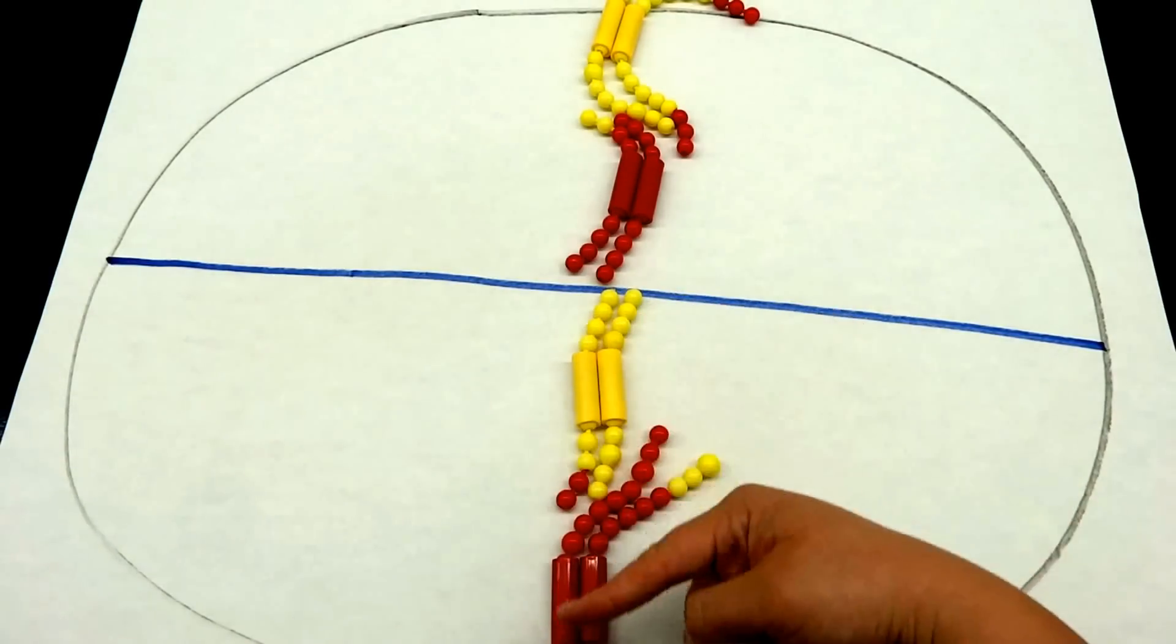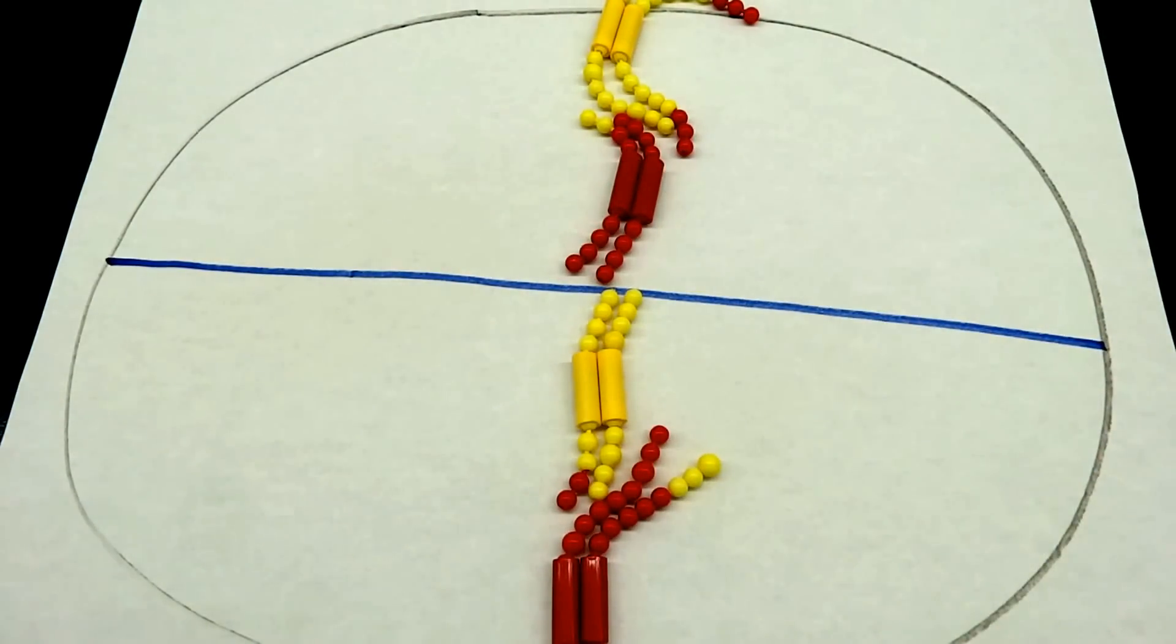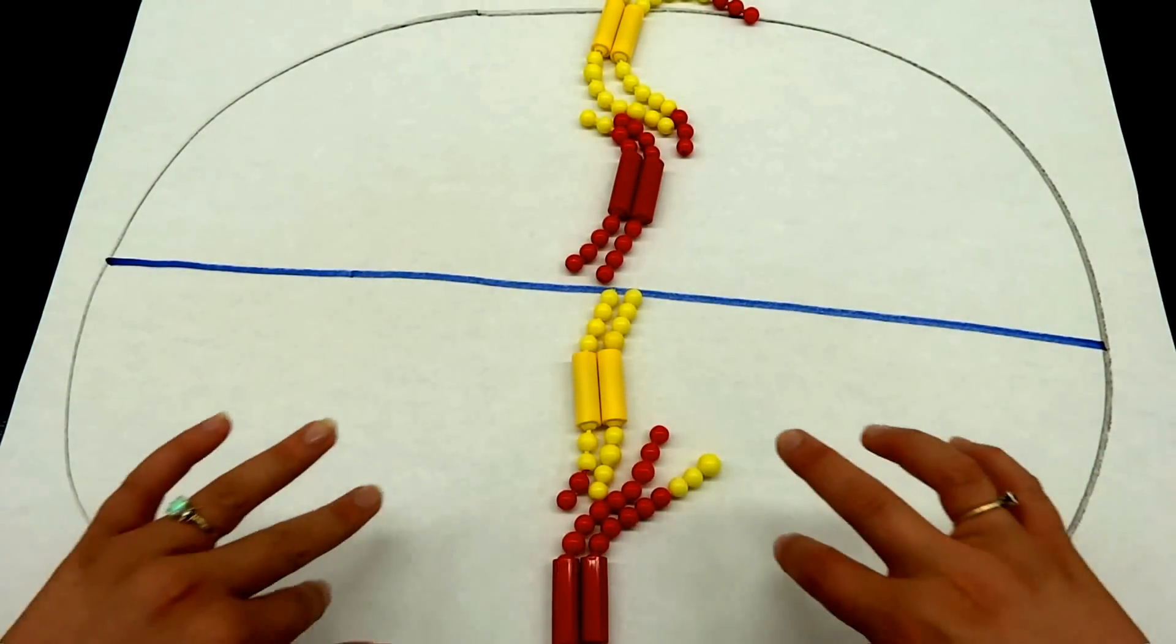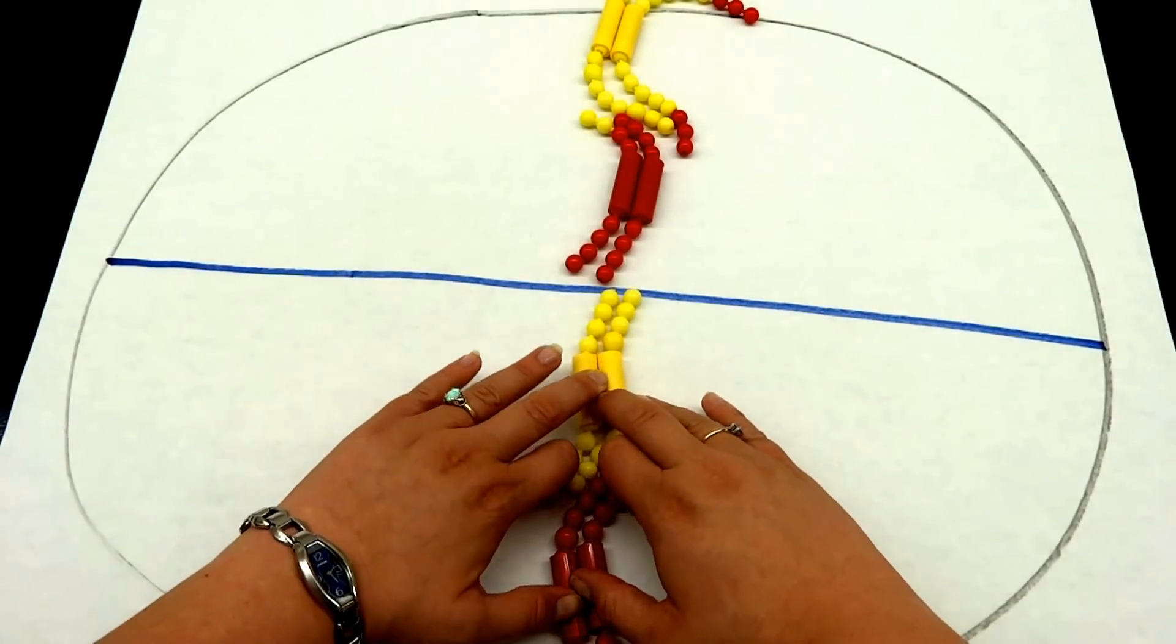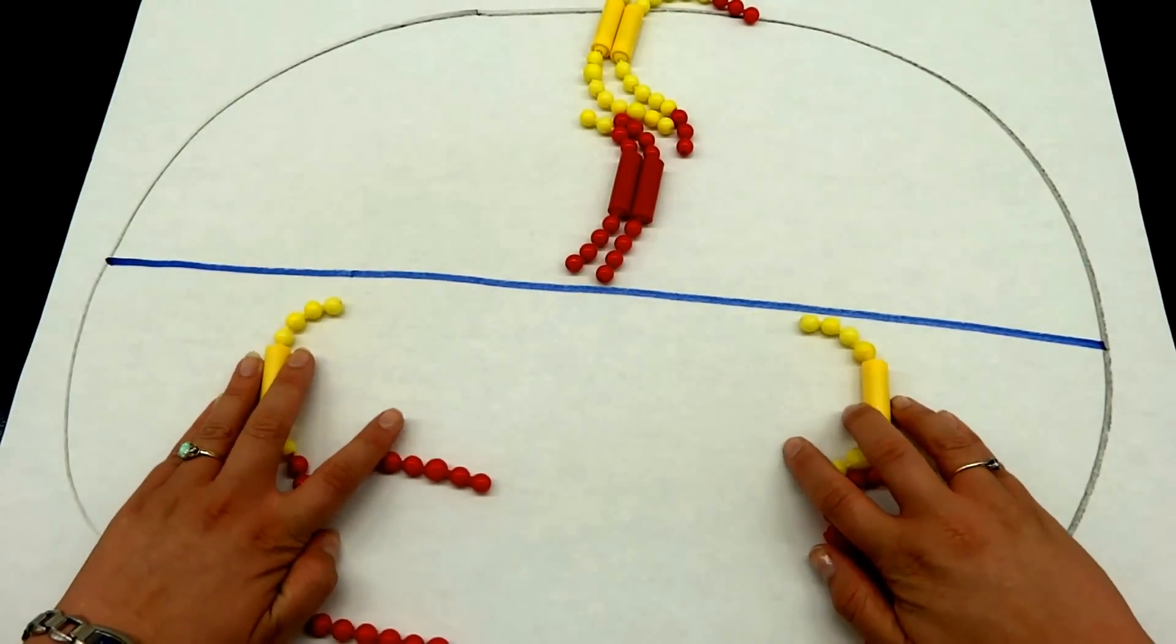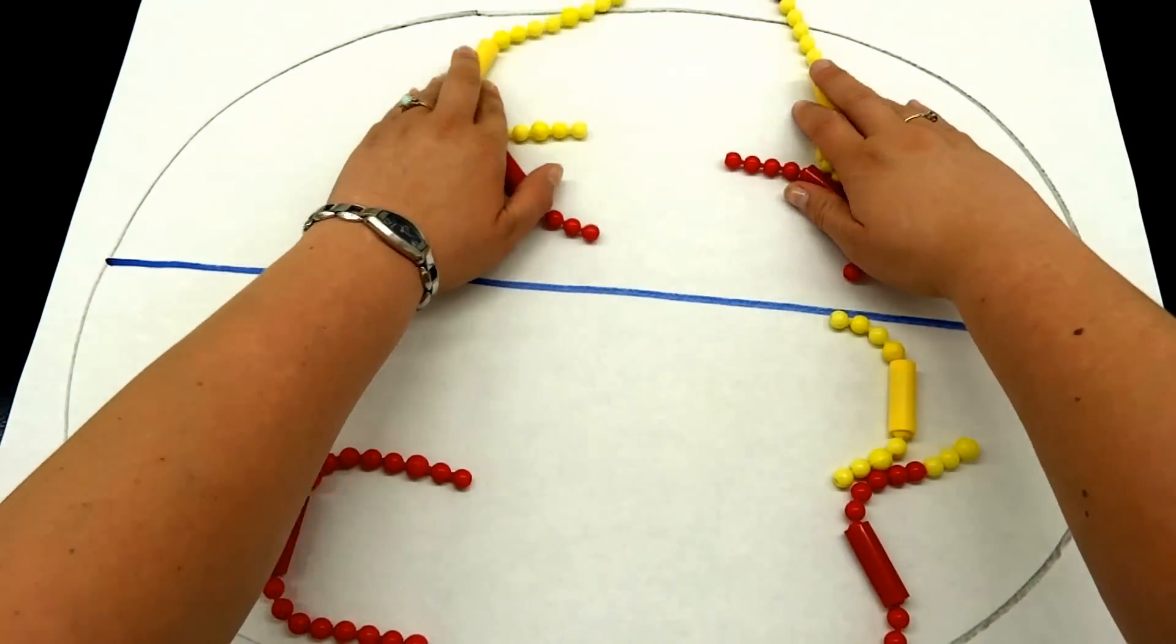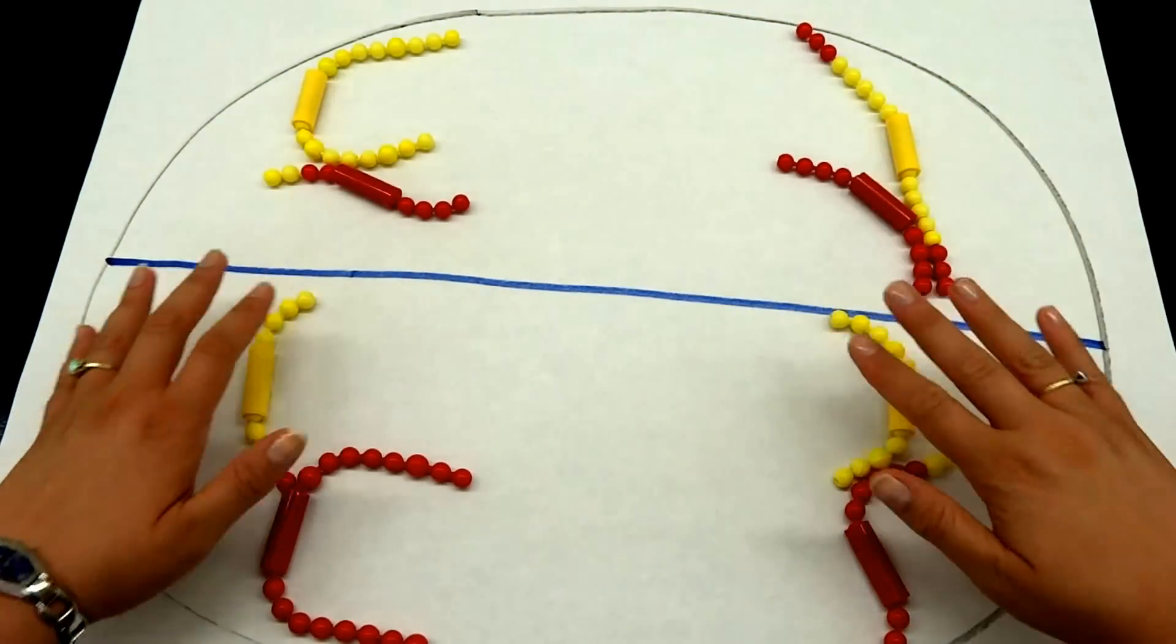During anaphase, we are going to separate these. So during anaphase two, we're going to pull apart our sister chromatids so that we have them on each side of, again, cell one and cell two.